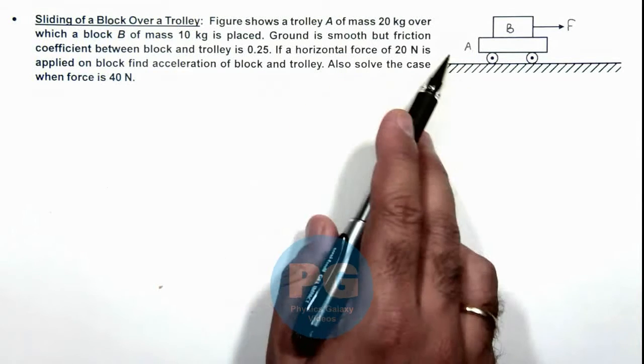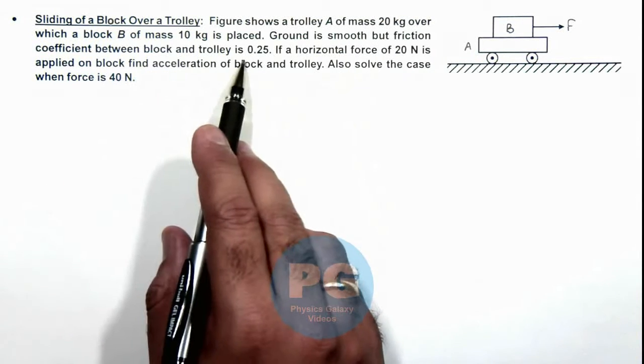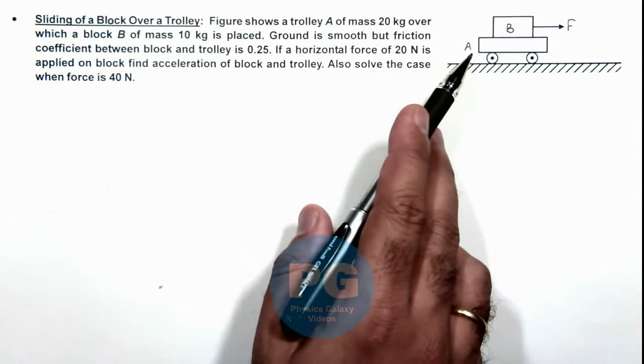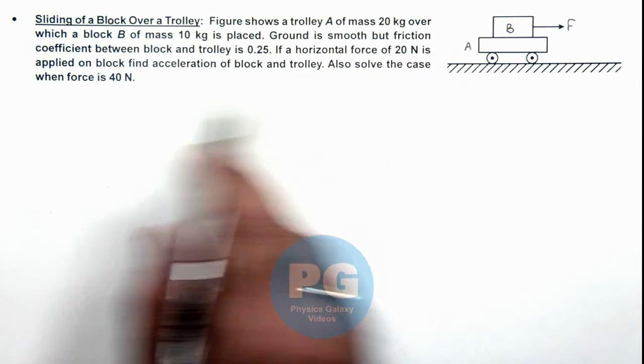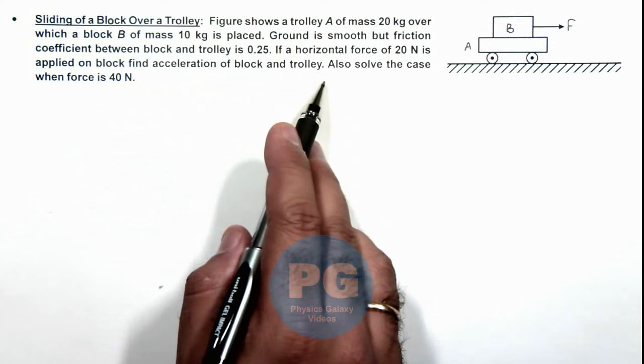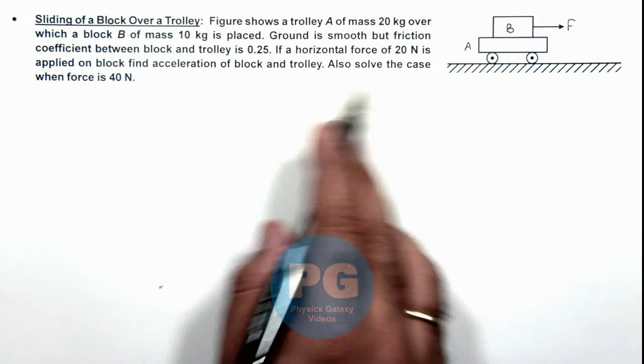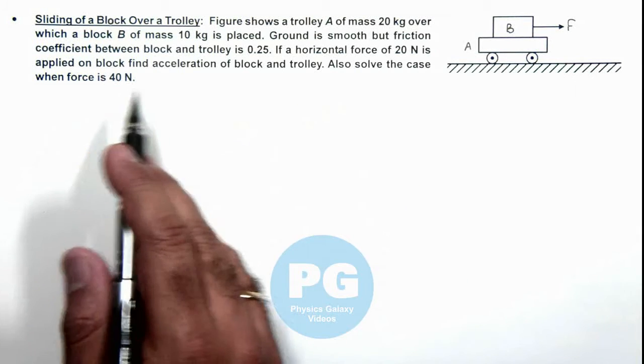Ground is smooth but friction coefficient between block and trolley A is 0.25. If a horizontal force of 20 newton is applied on block we are required to find acceleration of block and trolley. Also solve the case when force is 40 newton.